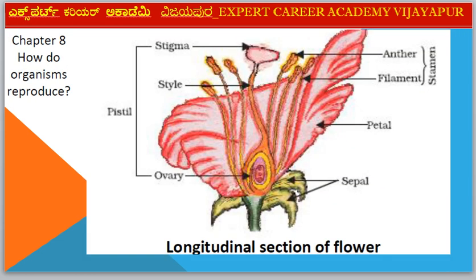Next diagram — Chapter 8: How Do Organisms Reproduce? Diagram: Longitudinal Section of a Flower, with all labeled parts.